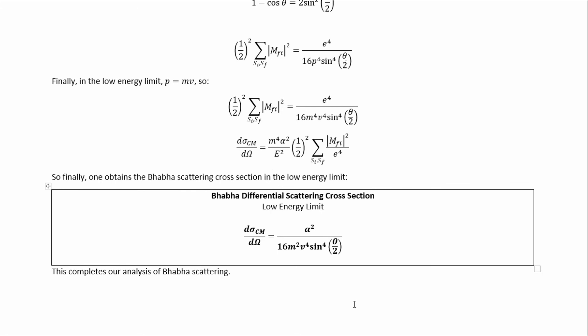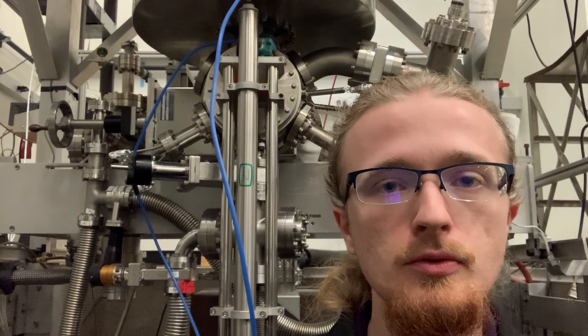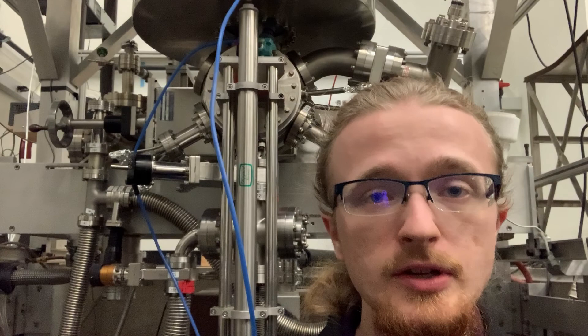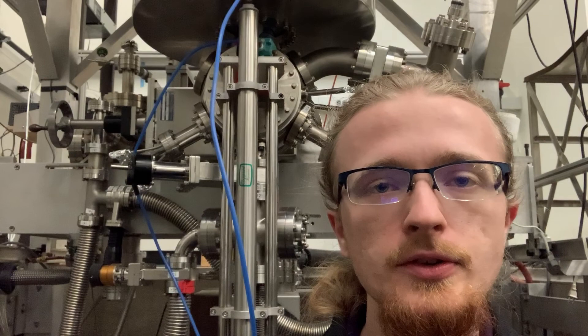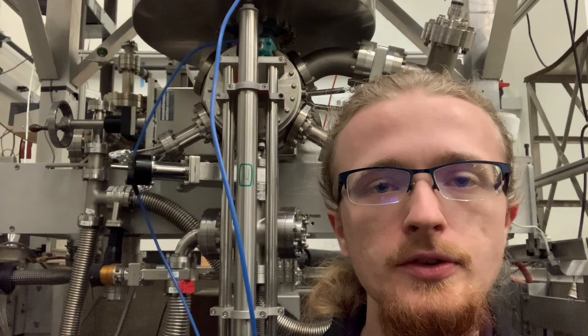That completes our analysis of BABA scattering. So now you know how to use the Feynman rules of quantum electrodynamics and the standard differential scattering cross-section general formula to calculate the tree-level differential scattering cross-section for BABA scattering. We handled the general case first, and then took the ultra-relativistic and low-energy limits of that general result to get the more famous and rather more elegant cross-section results for those cases. I hope you enjoyed this video — if you did, please give it a thumbs up and consider subscribing.